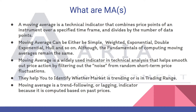A moving average combines price points of an instrument over a specified time frame and divides it by the total number of data points — meaning a simply computed moving average is taking a mean over the values of interest of candlesticks for a specified period. The value of interest for a given candlestick could be its open, high, low, or close, or any combination such as (open + low + high + close) / 4. Moving averages can be simple, weighted, exponential, double exponential, or Hull. In a weighted moving average, recent price is weighted more; in an exponential moving average, weights are given according to an exponential function.